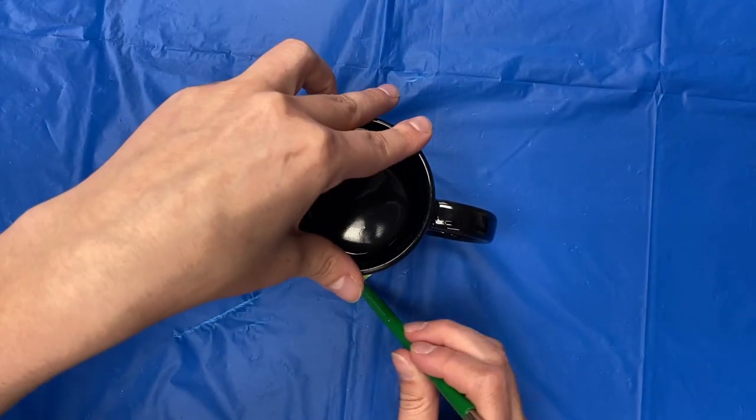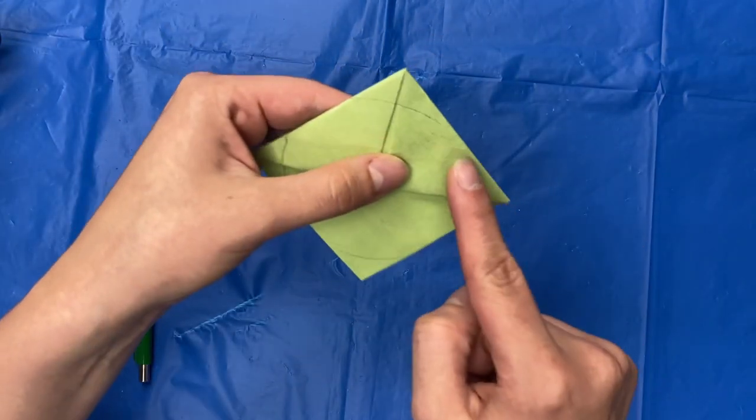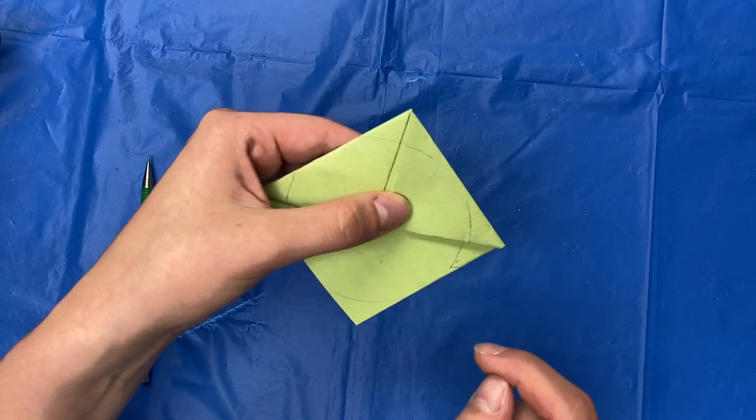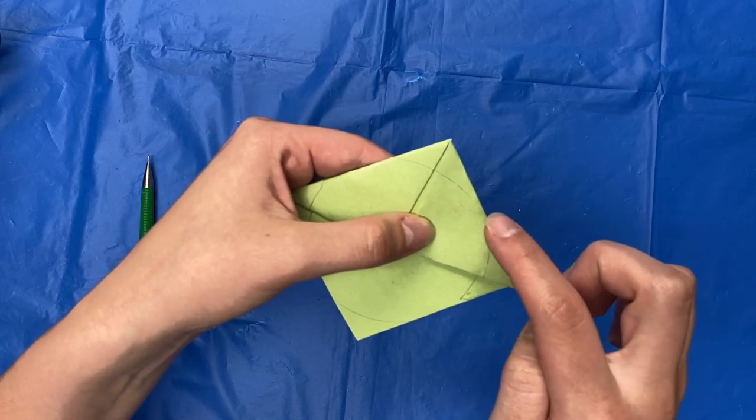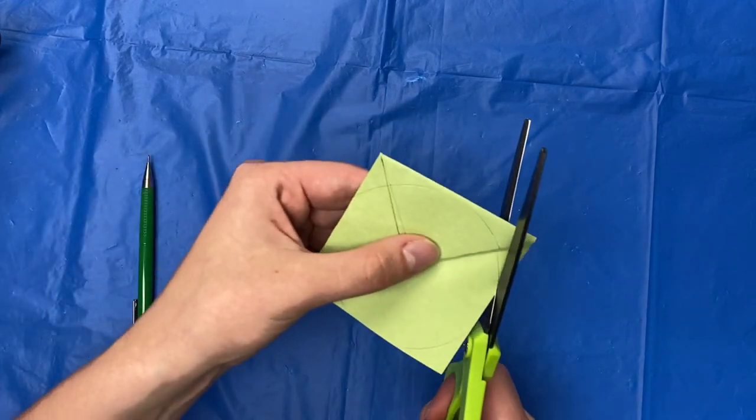Take your cup and trace a circle. You will see it doesn't quite come to the edges. You want to make sure you leave those sections uncut or else your bookmark will fall apart.